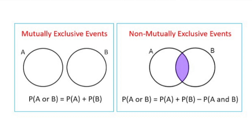If you have mutually exclusive events, the probability of A or B is simply the sum of the probability of A plus the probability of B. If events are inclusive, meaning they have some overlap, the probability of A or B is the probability of A plus the probability of B minus the probability of both A and B.